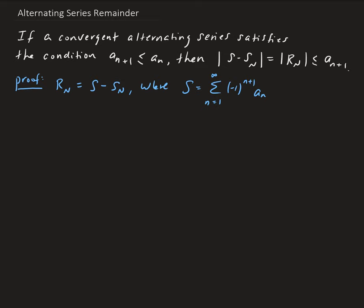From here, we can expand out S and S_n. We can express those in terms of the summation. So R_n is going to be equal to the alternating sum minus S_n. We're going from one to n, with (-1)^{n+1} times a_n. We want to show that this quantity is going to be less than or equal to the (n+1)th term.